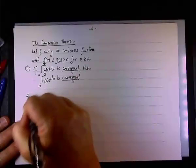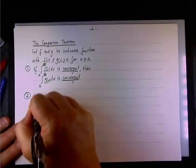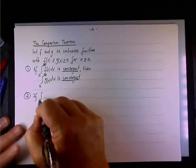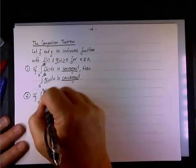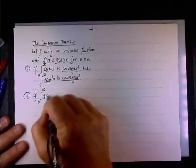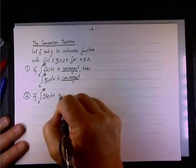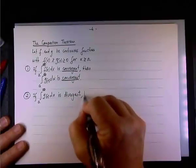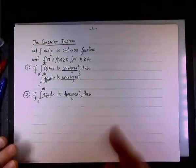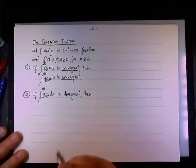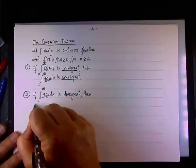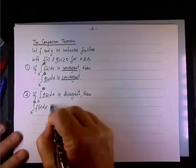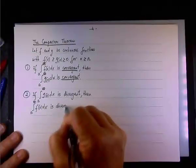And if you go in reverse, you get the second part of the theorem: if the integral from a to infinity of g(x) dx is divergent — remember g is the smaller of the two — and if this blows up, then it forces the integral from a to infinity of f(x) dx to be divergent as well.